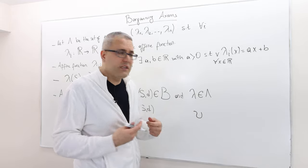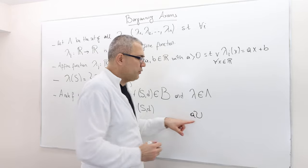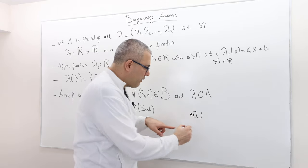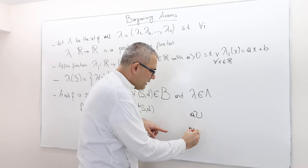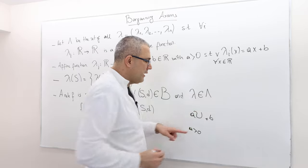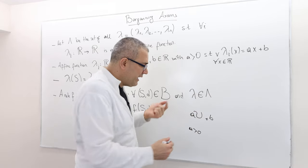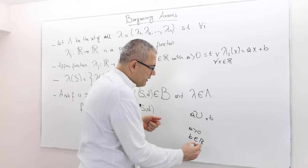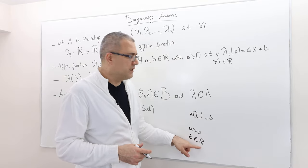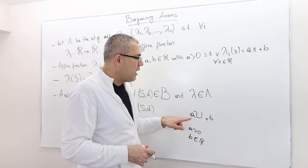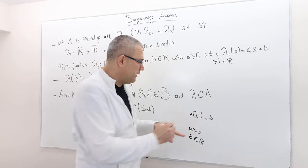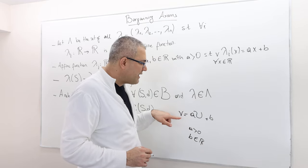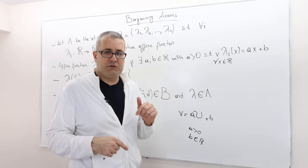What is the affine transformation? You multiply the utility function with some scalar — a real number a where a is positive — and add some real number b, where b can be positive or negative. This gives another utility function, which we call V, and V also represents that preference relation.